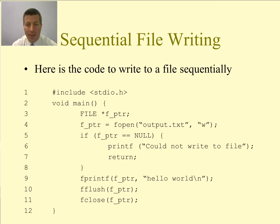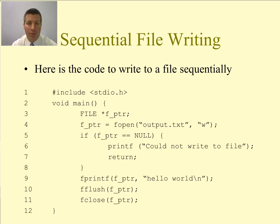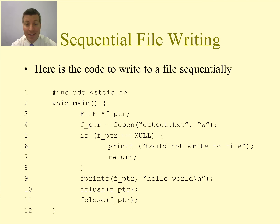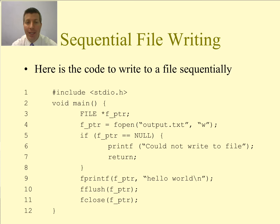Let's take a look at the code. On line three, I am creating a file pointer. There is a variable type called FILE — all capital letters — and we are going to create a pointer to a file. So I say FILE, the type of the variable, followed by the star, and then the name of the variable. In this case I named it f_pointer. That is just the name of a variable and you could have named it anything.